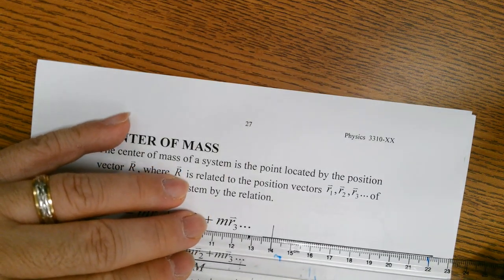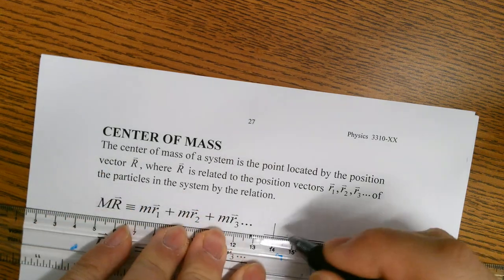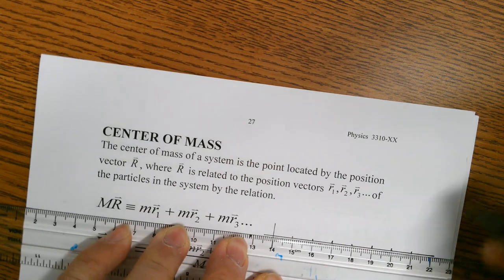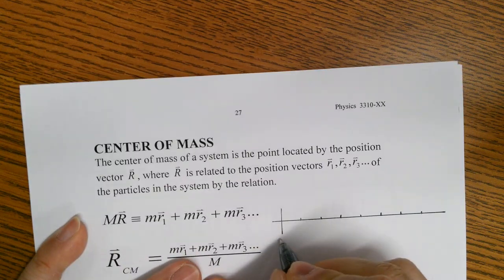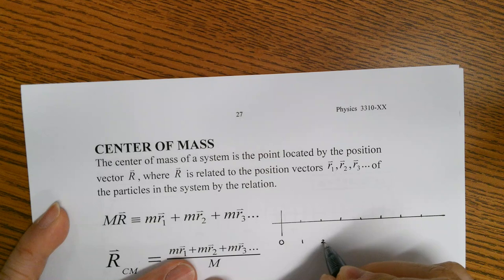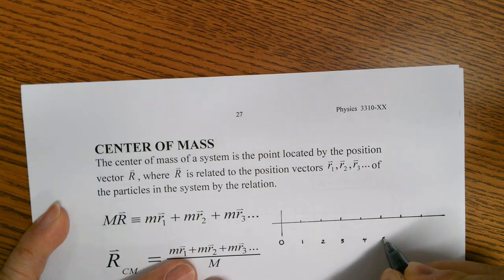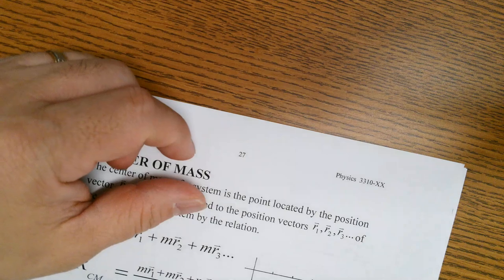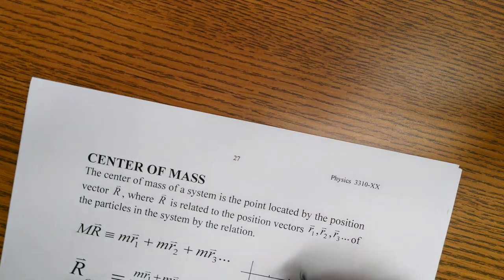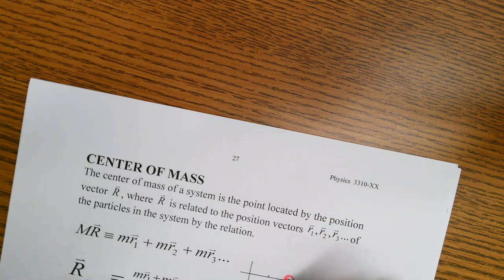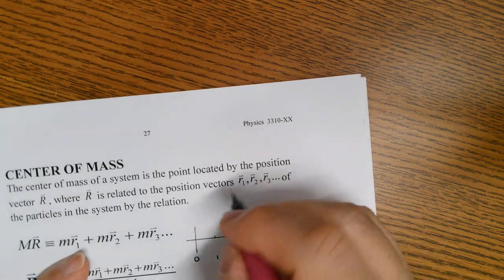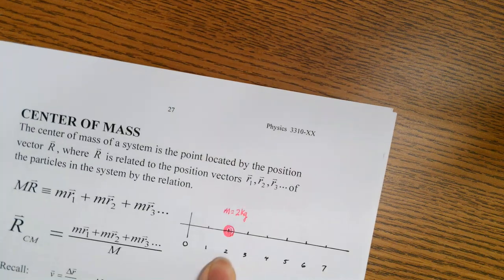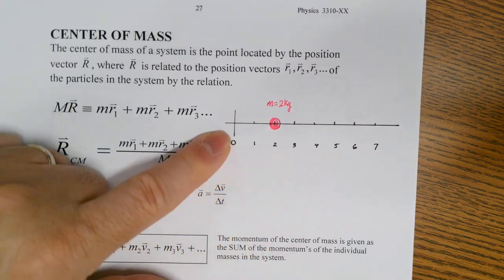So imagine I have a number line: here's my 0, and here's 1, 2, 3, 4, 5, 6, 7. Now let's say I have a pink mass right here at 2, and this mass is 2 kilograms, located at 2 meters from my reference point 0.